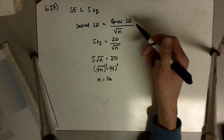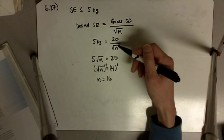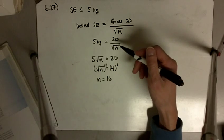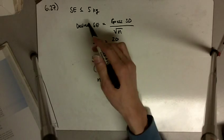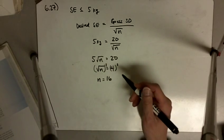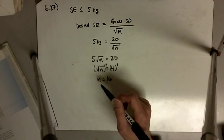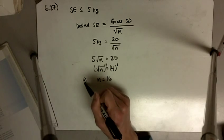So as long as we have 16 or more, and our standard deviation is about 20 or less, then our standard error will be 5 kilograms or smaller. Okay, so that's part A.